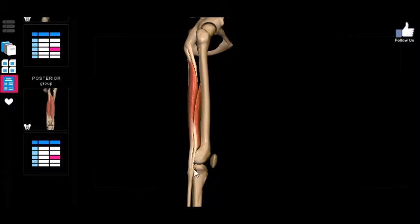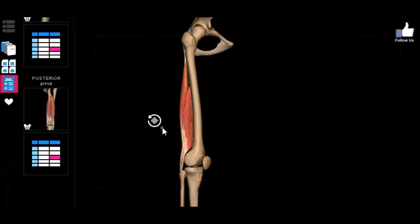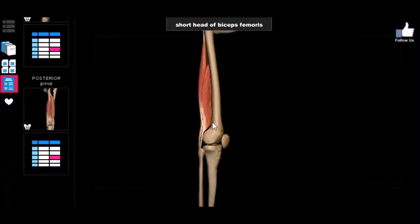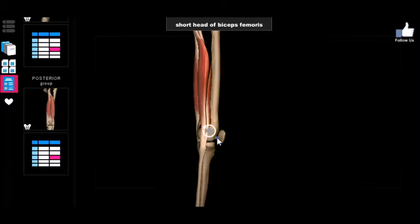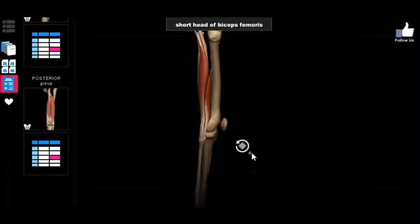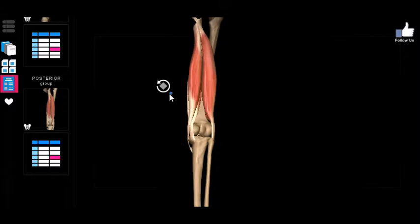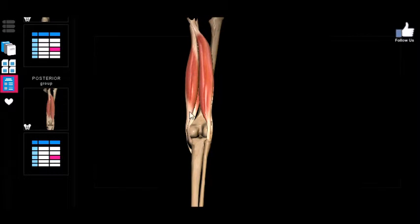When the muscle is oriented toward the lateral side, it's probably going to be innervated by the fibular division, because the fibular is right here on the lateral side. So the only muscle innervated by the fibular division is the short head of the biceps femoris. The long head of the biceps femoris, the semi-tendinosus, and semi-membranosus are actually innervated by the tibial division of the sciatic nerve.